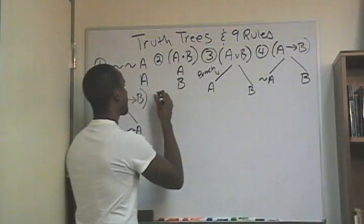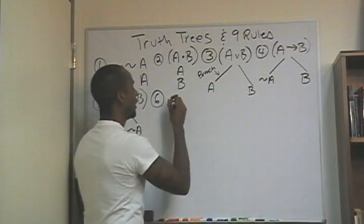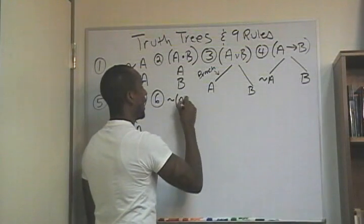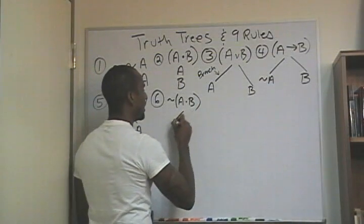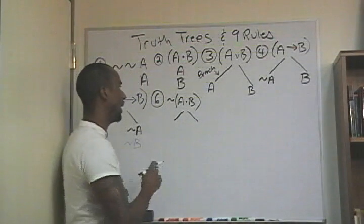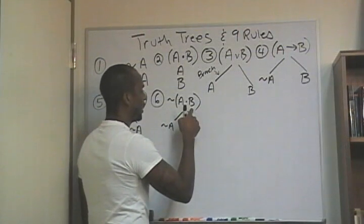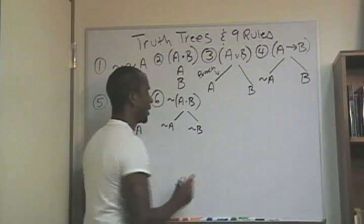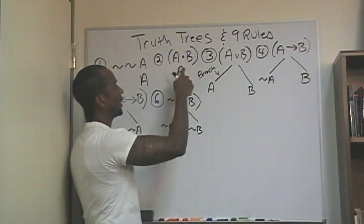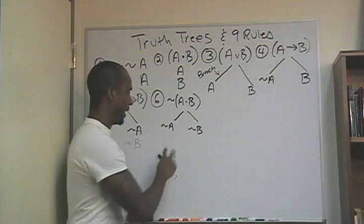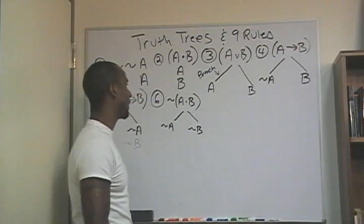Number six says it's going to be the negation of a conjunction. So if I say not (A and B), what happens is I have to make a disjunct out of that. I'm going to distribute the negation of A — so it's going to be not A — and I'm going to distribute the negation of B — and it's going to be not B. You do not want to write the negation of a conjunction vertically in truth trees; that would be incorrect. It has to be written as a branch. Just commit that to memory.